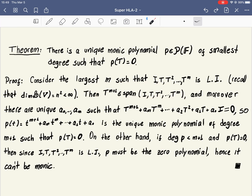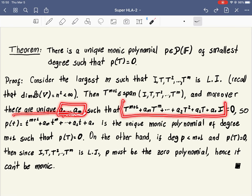And because the previous ones are linearly independent, it can be written in a unique way as a linear combination of them. And therefore, there exists unique coefficients a₀, a₁, a₂, all the way up to aₘ, such that this operator here is the 0 operator.